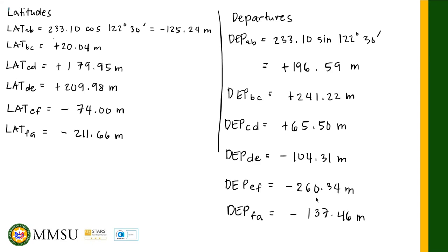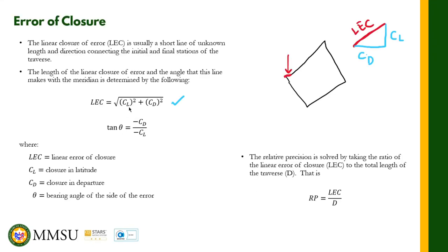We need to determine the precision of the instrument. To do this, we first need to find the linear error of closure, because we cannot solve for the relative precision without it. The linear error of closure is given by the formula: square root of CL squared plus CD squared. So we need to compute CL and CD first. Remember, CL is the difference between the north latitude and the south latitude.